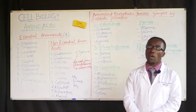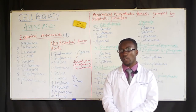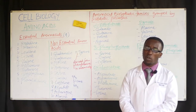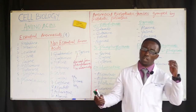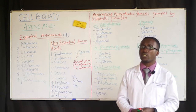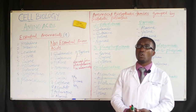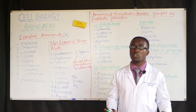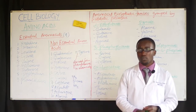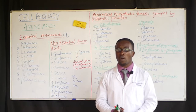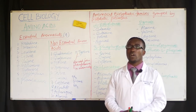Amino acids fall into two classes: essential amino acids and non-essential amino acids, and together there are 20 in number. We also have other rare amino acids, but these 20 are mainly important in the formation of body tissues, organs, and the entire organism. Essential amino acids are 9 in number and non-essential amino acids are 11, totaling 20.